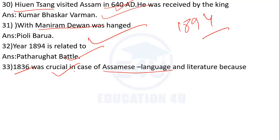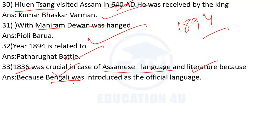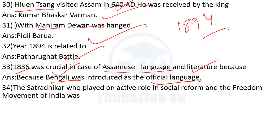1836 was very crucial — the Assamese language issue. In 1836, Bengali was introduced as the official language of Assam instead of Assamese. Who participated in the Assamese cultural and social movement to restore the Assamese language?